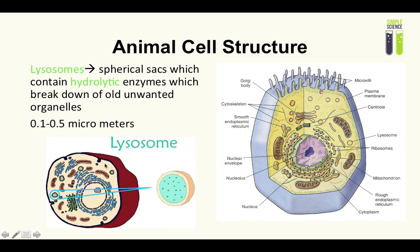Lysosomes are only used where they need to be. This is an animal cell — the lysosome is just a circle with a single membrane, around 0.1 to 0.5 micrometers in size.